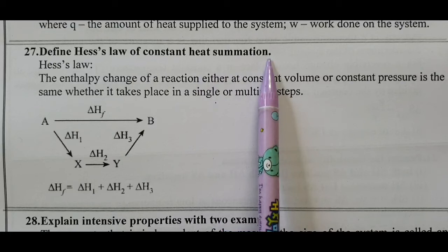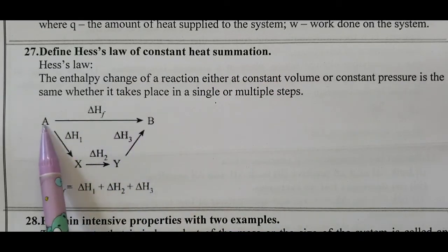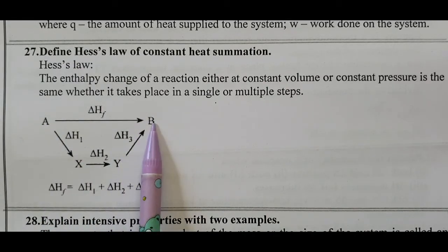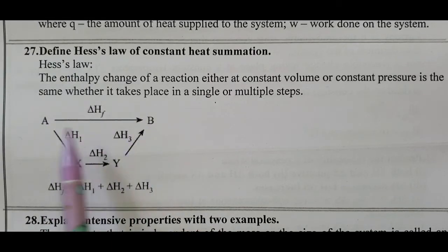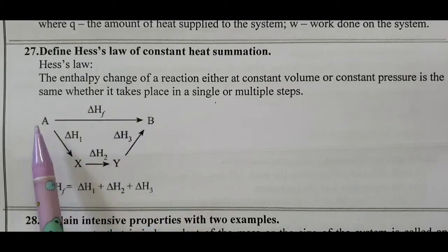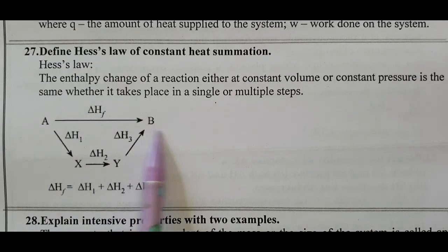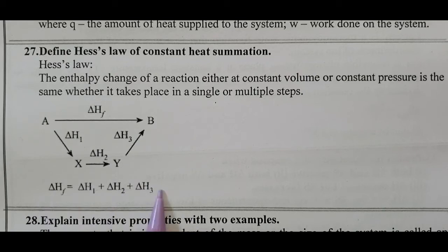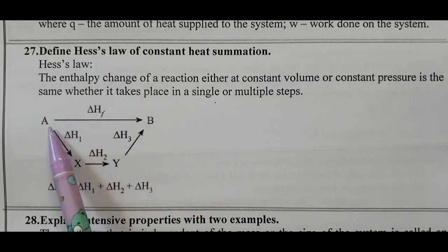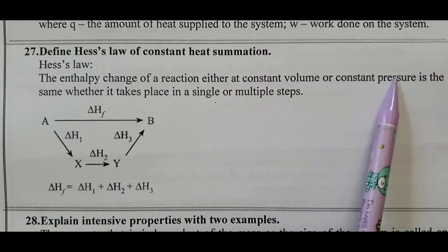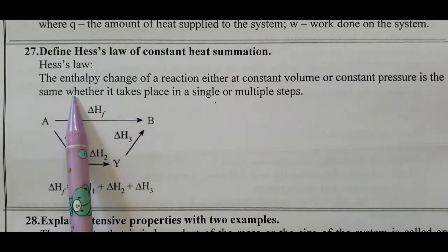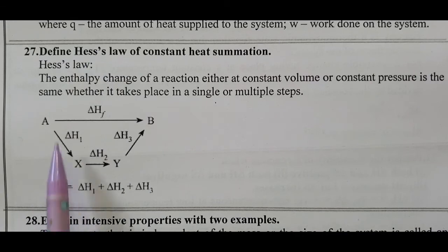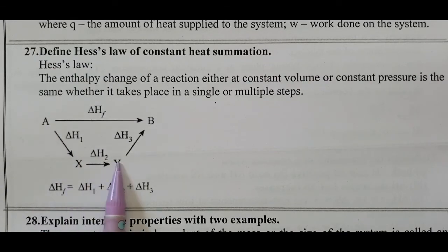Question number 27: Hess's Law of Constant Heat Summation. Whether a chemical reaction takes place in one step or in multiple steps, if the initial state and the final state are the same, the enthalpy change is the same. The enthalpy change of a reaction is the same whether it takes place in a single step or in multiple steps. Delta H formation equals delta H1 plus delta H2 plus delta H3.